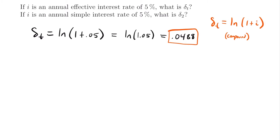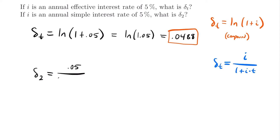This is the force of interest when we have an annual effective interest rate of 5%. Now we want to know: if we have an annual simple interest rate of 5%, what is the force of interest at time t equals 2? This uses the other formula we know: δ(t) = i divided by (1 + i·t). So δ(2) = 0.05 divided by (1 + 0.05 × 2).